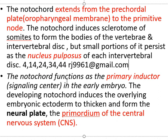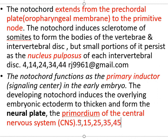The notochord functions as the primary inductor in the early embryo. The developing notochord induces the overlying embryonic ectoderm to thicken and form the neural plate, the primordium of the central nervous system. Roll numbers 5, 15, 25, 35, and 45 will send the assignment of today's lecture, and roll numbers 4, 14, 24, 34, and 44 will send the assignment of the previous lecture.